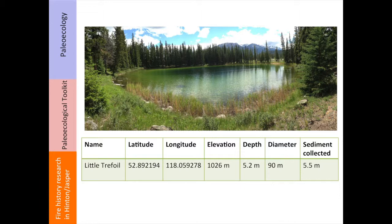This is Little Trefoil Lake, at an elevation of about 1,000 meters. The depth of it is about 5.2 meters — it's a relatively small lake; most people would probably refer to it as a pond. From this lake, Katrina collected 5.5 meters of sediment, probably going back 7,000 to 10,000 years in time. Emma's focusing on about the top three meters of sediment, which takes her back to about 2,000 years in the past.